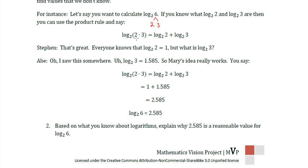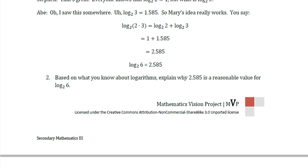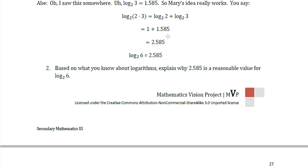Well, we know how to break up multiplication in terms of logarithms. Log base 2 of 2 times 3 is the same thing as saying log base 2 of 2 plus log base 2 of 3. And we know this guy, it's an identity. Log base 2 of 2 is just 1. That's an identity we've been using for a while. But log base 2 of 3 we actually need to look up. Abe looked it up apparently, and he says log base 2 of 3 is 1.585. So 1 plus 1.585, we get 2.585. Therefore, log base 2 of 6 equals 2.585.